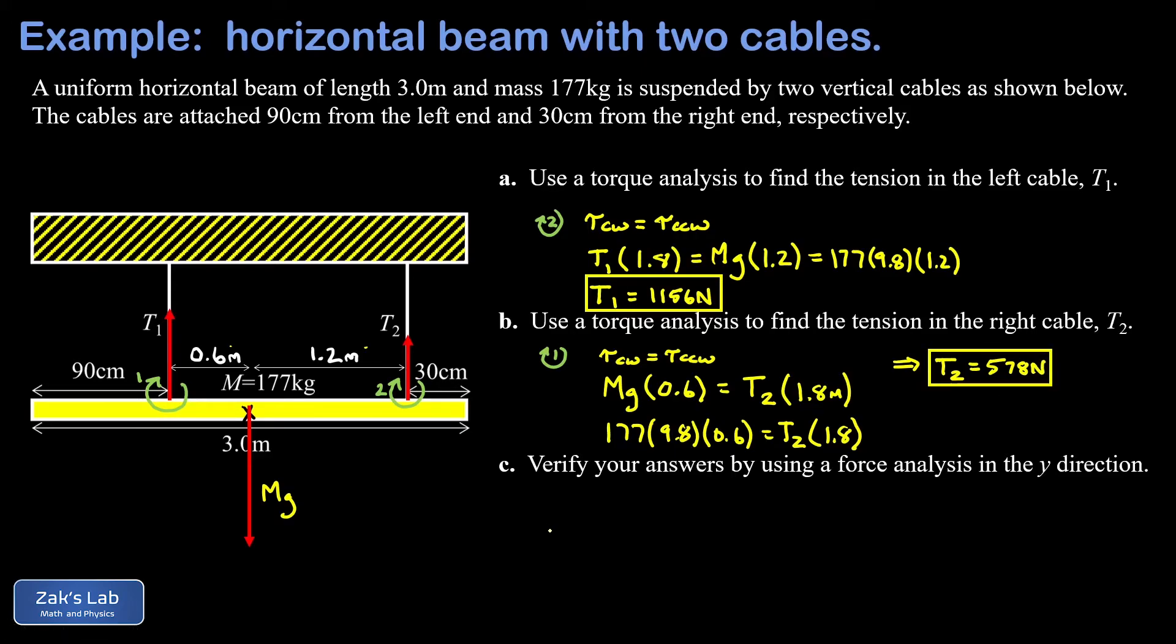Finally, in part c, we're asked to verify our answers by using a force analysis in the y direction. What we're looking for here is that the net force in the y direction must be zero, and this gives us a convenient way to check our work. We'll use the standard sign convention and call all the upward forces positive, the downward force negative, and see if they add up to zero.